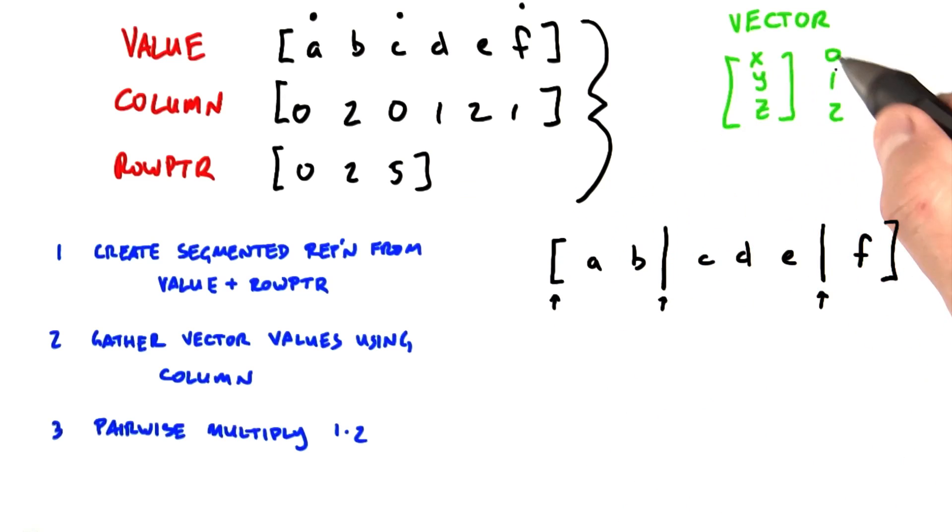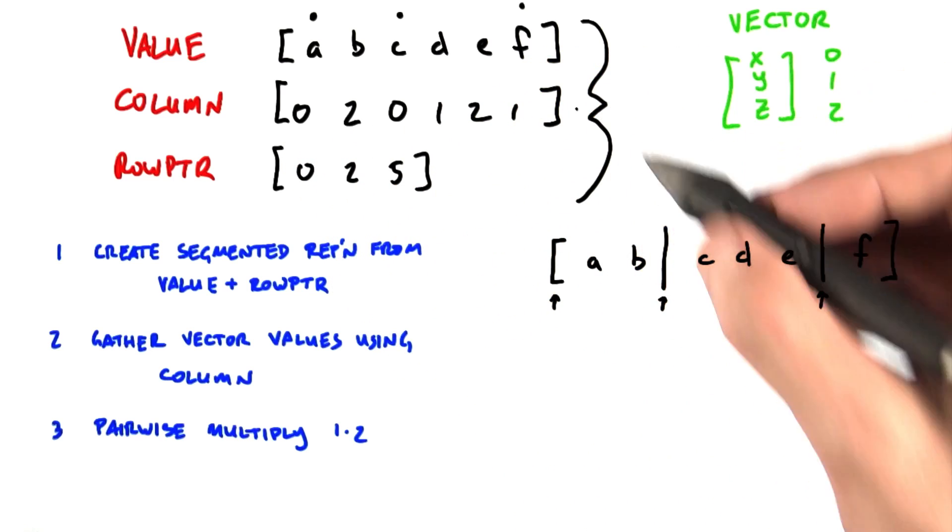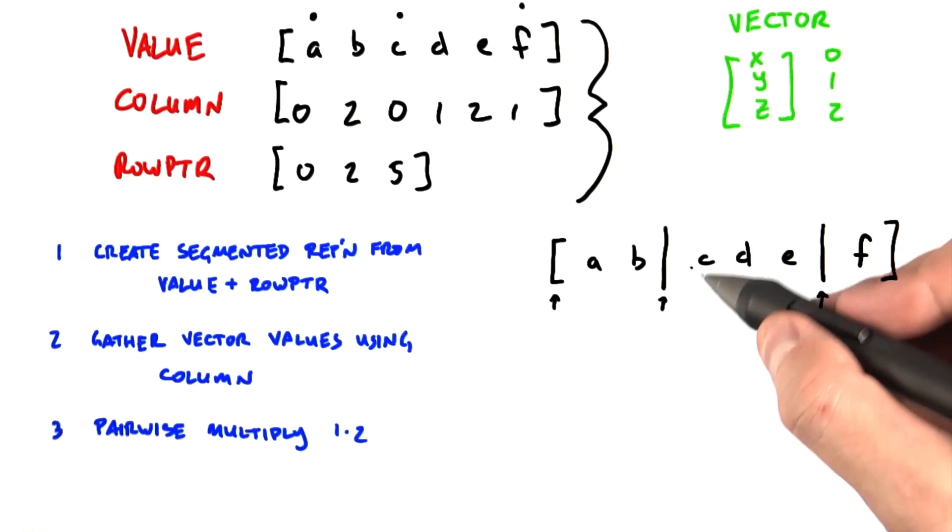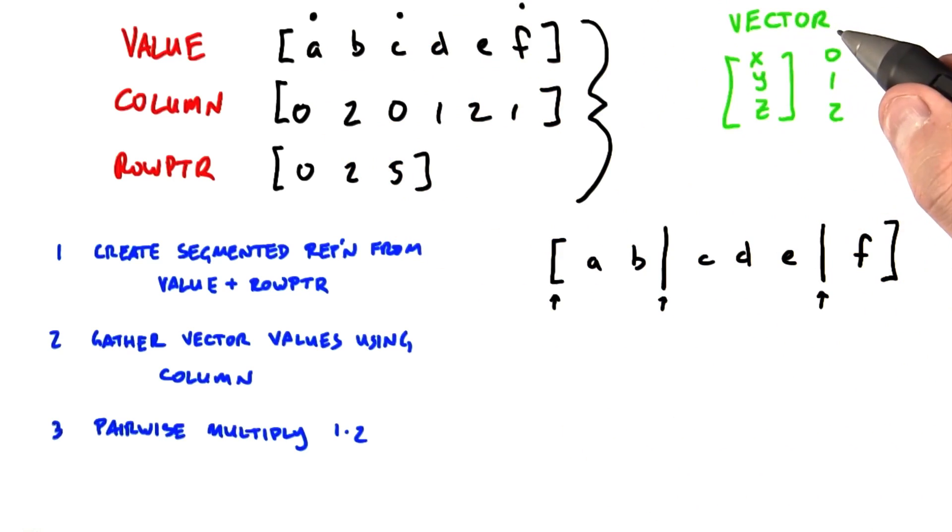The next thing that we're going to do is gather these vector values using these column indices to create a corresponding list from which we can multiply each of these individual matrix entries. So we see that value A is located in column 0, which means it needs to be multiplied by the vector element in row 0.